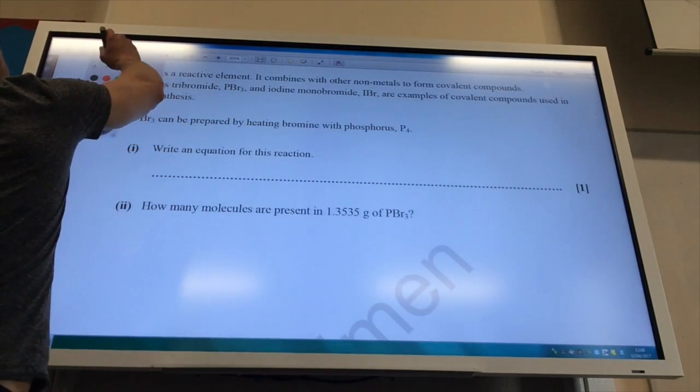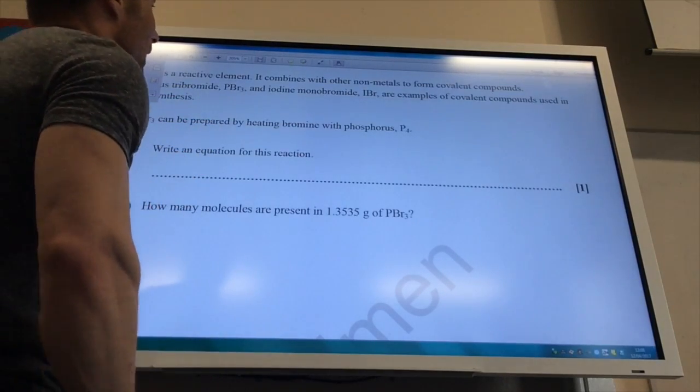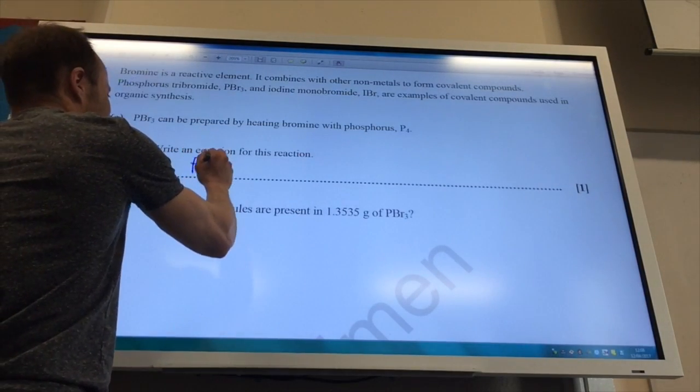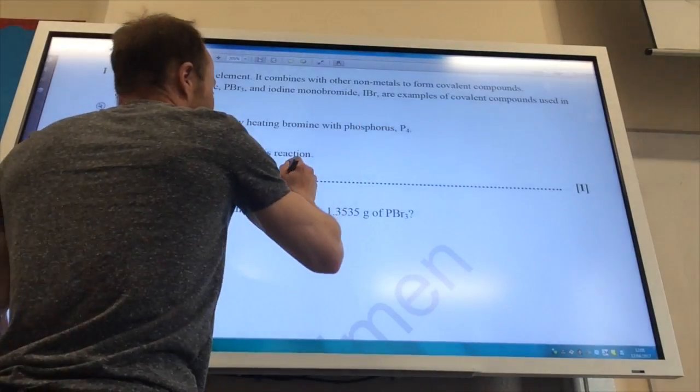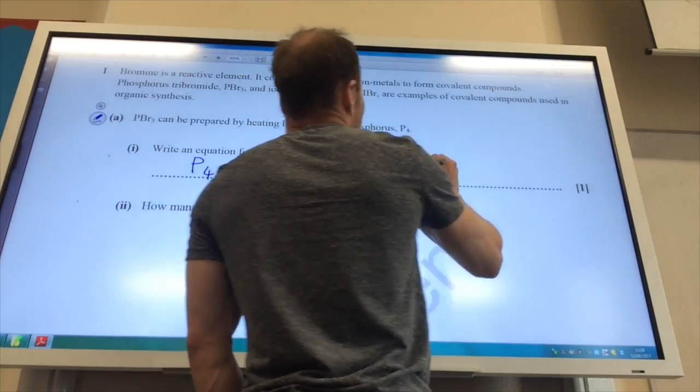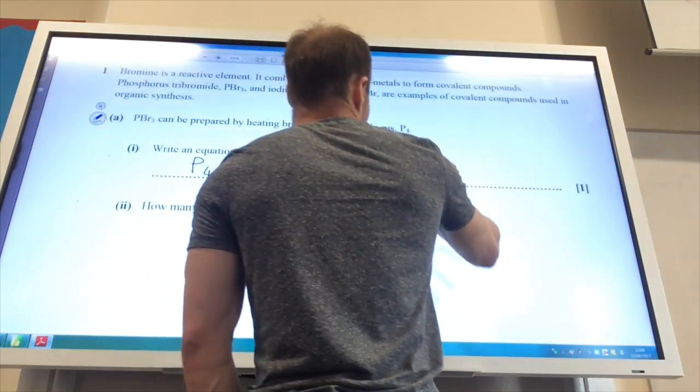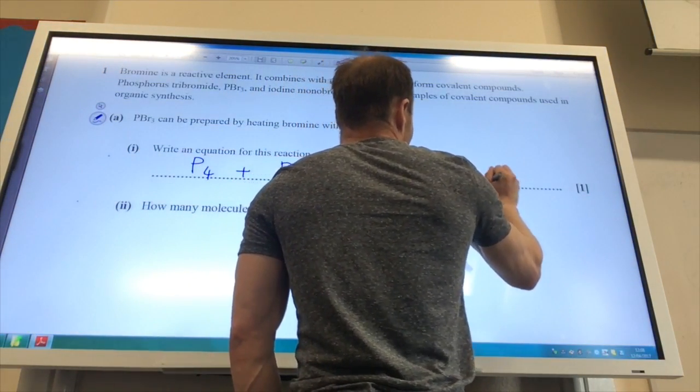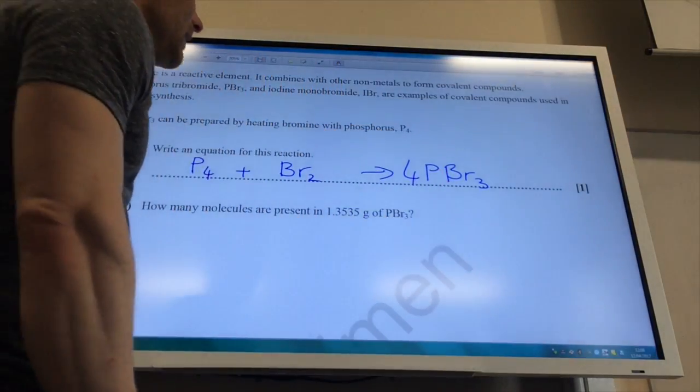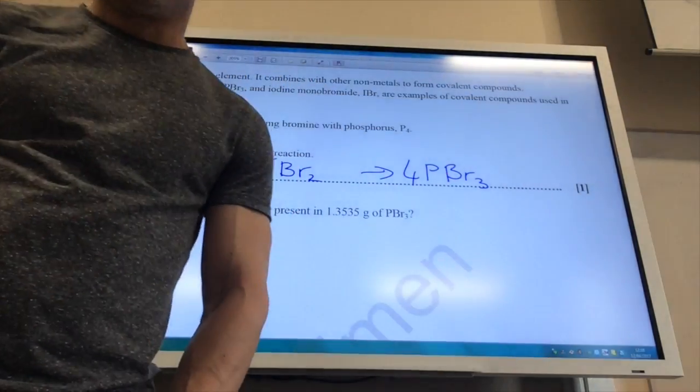So let's kick off, and it wants me to first of all write an equation for the reaction of bromine with phosphorus. So the key thing to remember, they told me phosphorus is P4, so that's good. Bromine is of course a diatomic molecule, so it goes around in pairs. It's given me the formula of phosphorus tribromide, which is rather lovely of it. I've got four phosphorus there, which means I need four there. So I have got a total of 12 bromines there, which means I need six Br2 there.